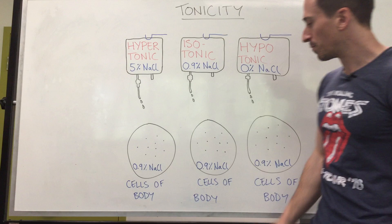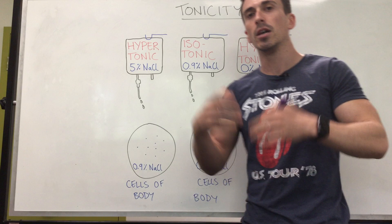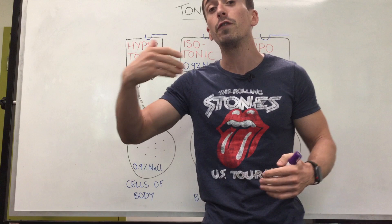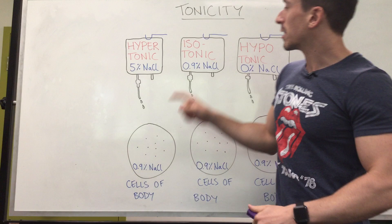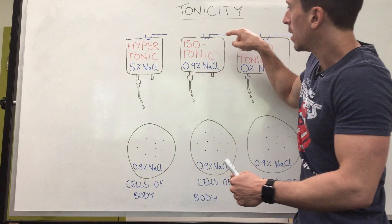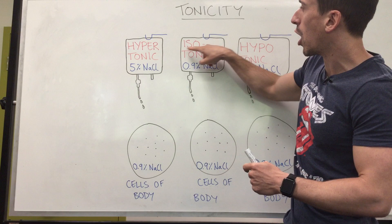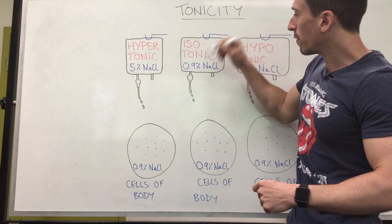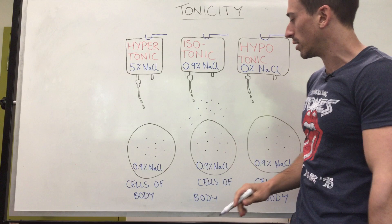Let me give you an example. We've got the cells of our body with a concentration of 0.9% salt inside. We've got some solutes inside this cell, and now we're infusing into a patient a bag that also contains 0.9% salt. When the concentration of the solution you are introducing is the same as the concentration inside the cells, it is termed isotonic. Iso means the same; tonic refers to the concentration.